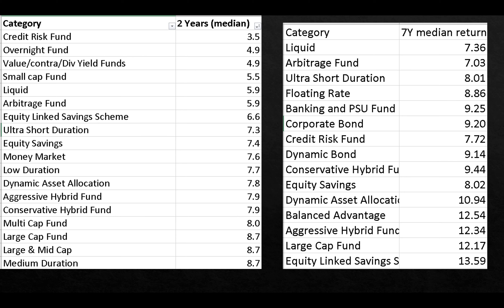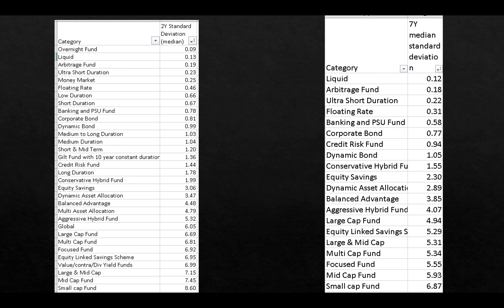Instead, if you use the two-year and seven-year median standard deviation to categorize funds and list them in terms of increasing standard deviation — increasing volatility — you get a very clear picture. You have overnight, liquid, arbitrage, ultra short, money market, floating rate, low duration, and short duration at the low end, clearly showing debt funds ordered by bond tenure. As tenure increases, volatility increases. Then come the hybrids, followed by large cap, multi-cap, focused, ELSS, value, contra, large and mid cap, mid cap, and small cap — with small cap being the most volatile.